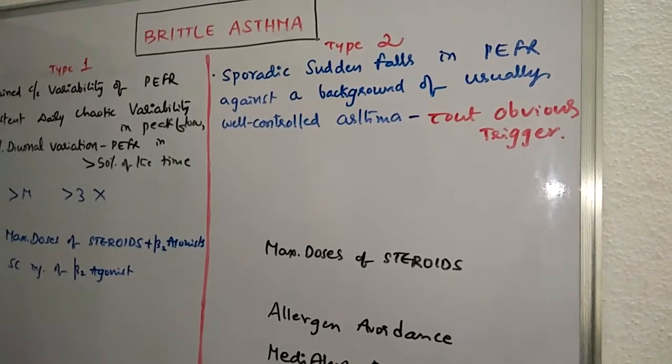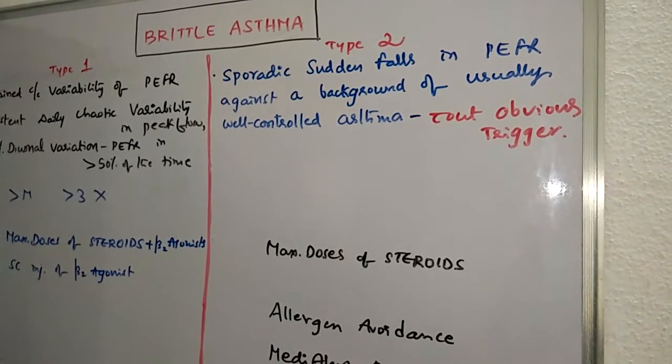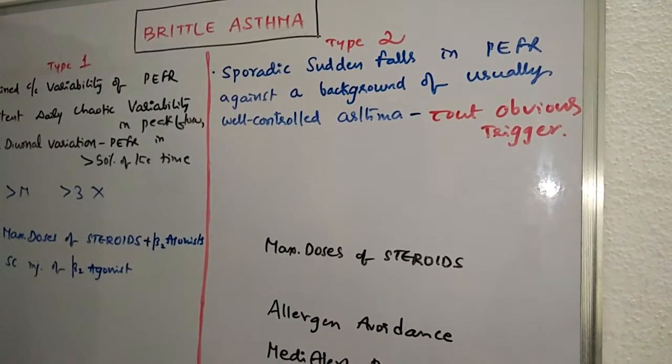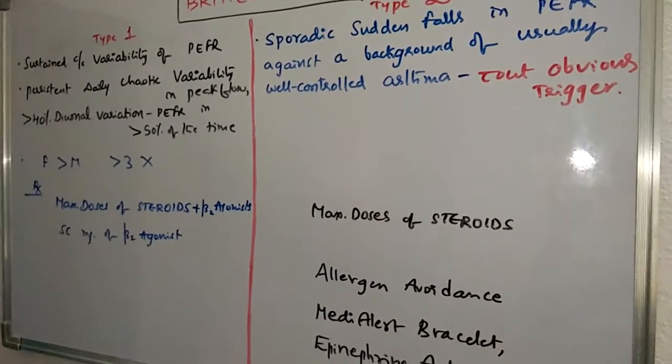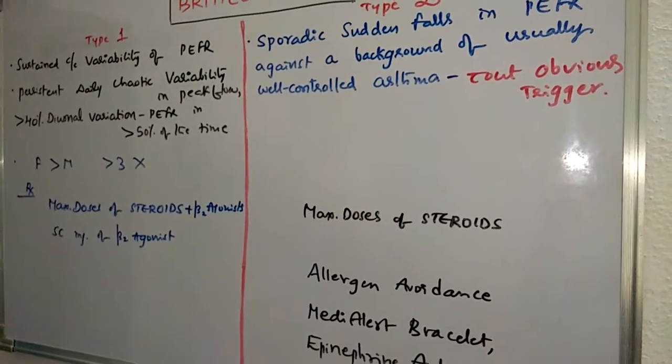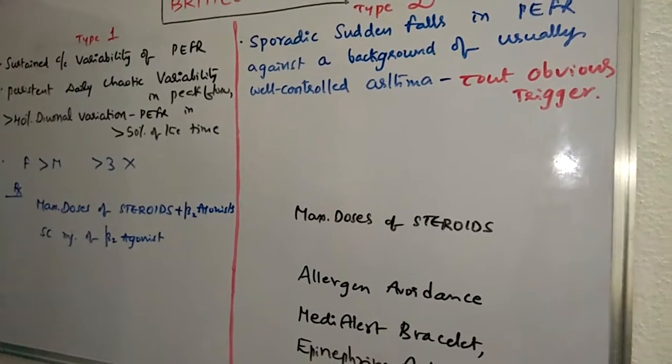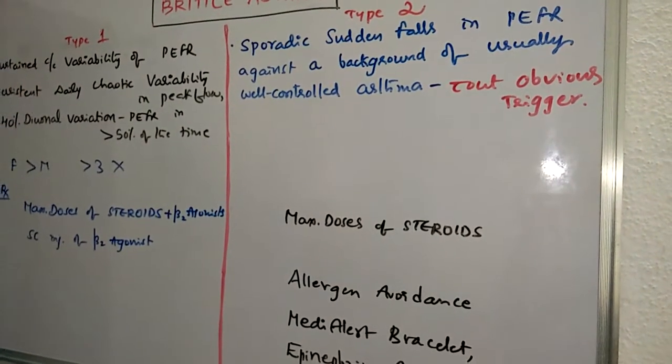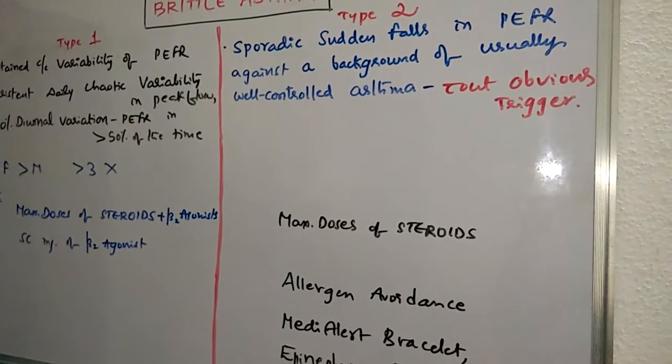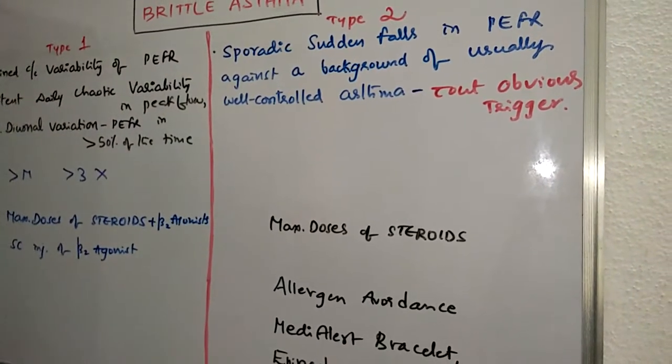Depending on the stability of the patient's maximum speed of expiration or peak expiratory flow rate, type 1 is characterized by sustained chronic variability of peak expiratory flow rate. Type 2 is characterized by sudden unpredictable drops in peak expiratory flow rate where asthma symptoms are otherwise well controlled and the function of lungs is not substantially impaired.